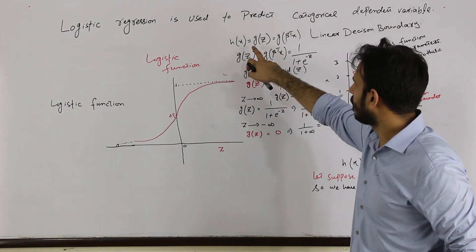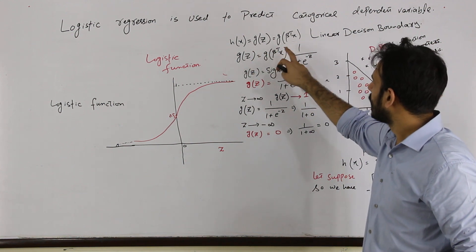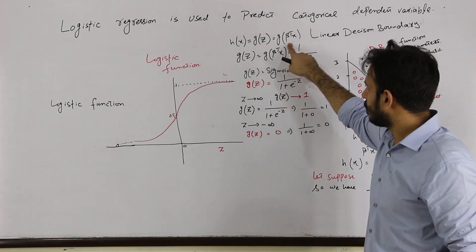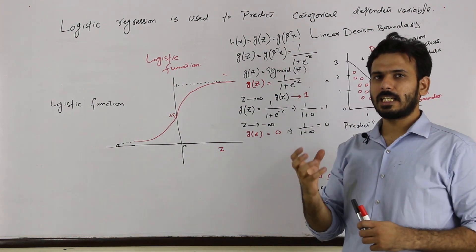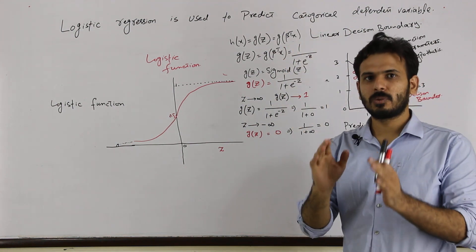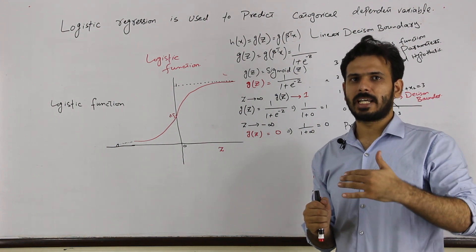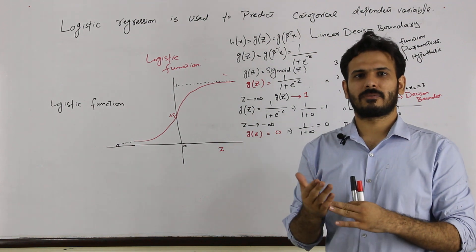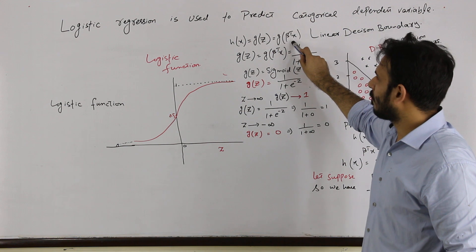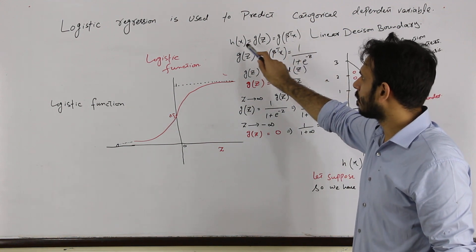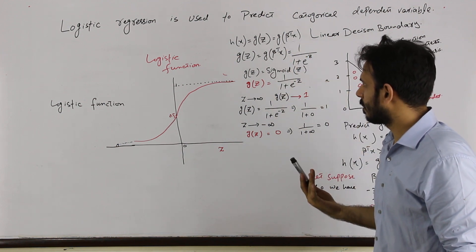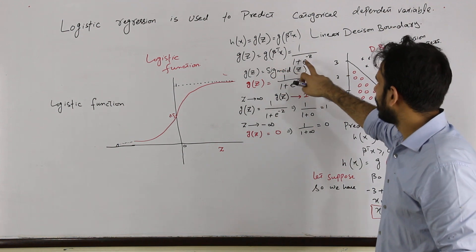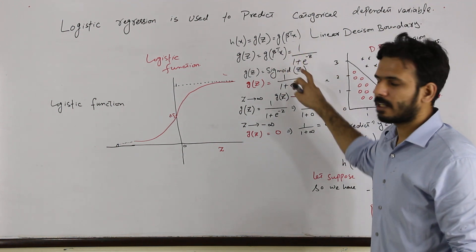We have basically the logistic function formula: H of x, g of z, is equal to g of beta transpose x. Beta transpose x is basically our linear function. What we are doing here is taking a linear input and then converting it into a probabilistic form of output — either 0 or 1. We have g of z equal to 1 over 1 plus e raised to the power minus z. This function is basically our logistic function.